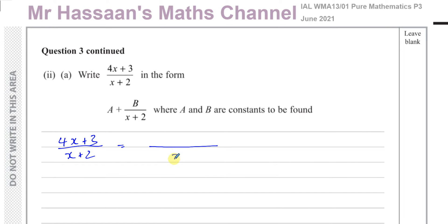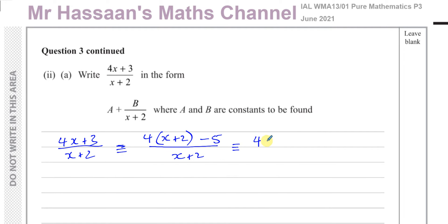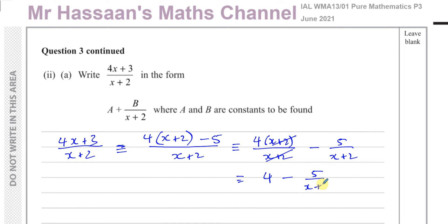For method one, I'll write (4x+3)/(x+2). I'll write (x+2) in the numerator — to get 4x I need to multiply by 4, giving 4(x+2) = 4x+8. I want 4x+3, so I subtract 5: this gives 4x+8 minus 5, which is 4x+3. Now I can split into two fractions with denominator (x+2): 4(x+2)/(x+2) minus 5/(x+2). The (x+2) cancels, leaving 4 minus 5/(x+2).